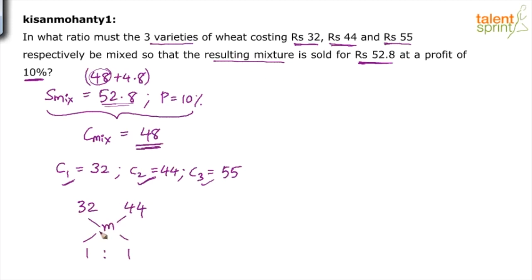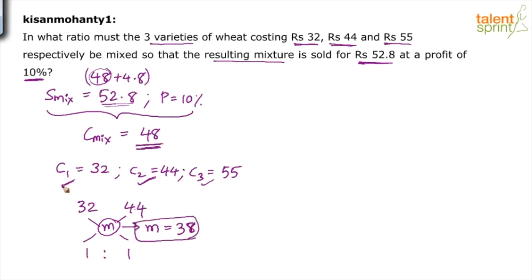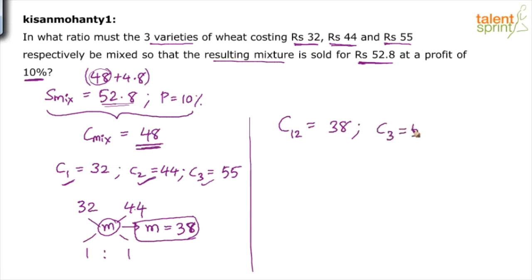Apply the allegation rule to C1 and C2. A 1:1 ratio means the difference of m with 44 should equal the difference of m with 32, so m must be exactly between 32 and 44. That is 38: 38 − 32 = 6 and 44 − 38 = 6, giving 6:6 = 1:1. So m = 38. Mixing the first two varieties in a 1:1 ratio gives a mixture at ₹38/kg.